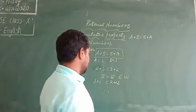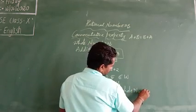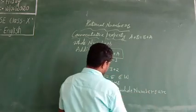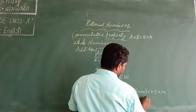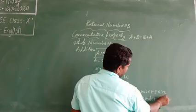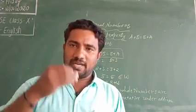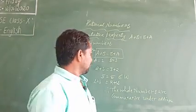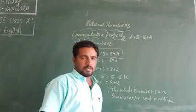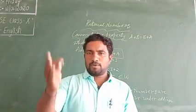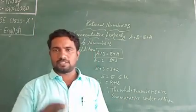Therefore, the whole numbers are commutative under addition operation. You can take any type of whole numbers and substitute them in this addition operation, and the result will be the same.